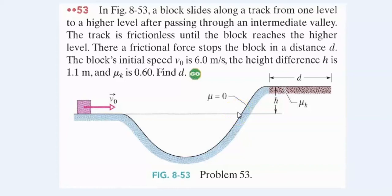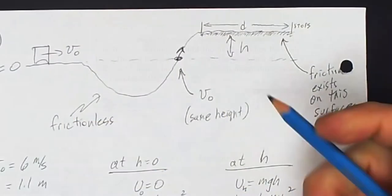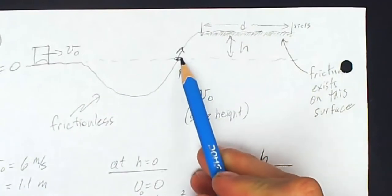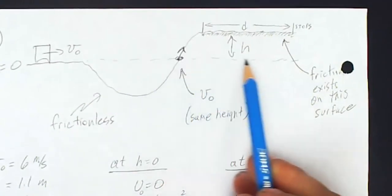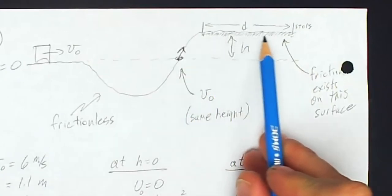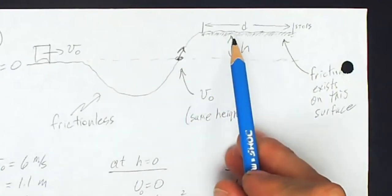Remember, kinetic energy is not a vector. So this 6 meters per second horizontal will now be 6 meters per second going up the ramp. So I've chosen to use this as my starting point. That way, I can say that this level is h equals 0, and this level up here is going to be the value of h of 1.1.